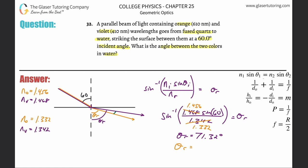...times the sine of 60 divided by 1.332. You get a value of about 71.199 degrees. Notice how it's a little less - that's exactly what the picture depicts.